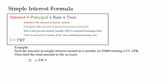We're trying to find the total amount of interest earned. Principal is how much we invested in the account — that's $3,400. The rate is 4.5% annual percentage rate, so we move the decimal two places and get 0.045. Now the tricky part is the time: it's measured in years, but I only want two months. That's two months out of 12, or one-sixth of a year. So I need to multiply by two-twelfths.